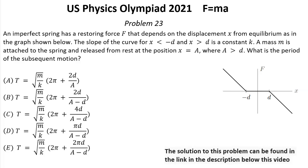The slope of the curve for X less than negative D and X greater than D is a constant K. A mass M is attached to the spring and released from rest at the position X equals A, where A is greater than D. What is the period of the subsequent motion?